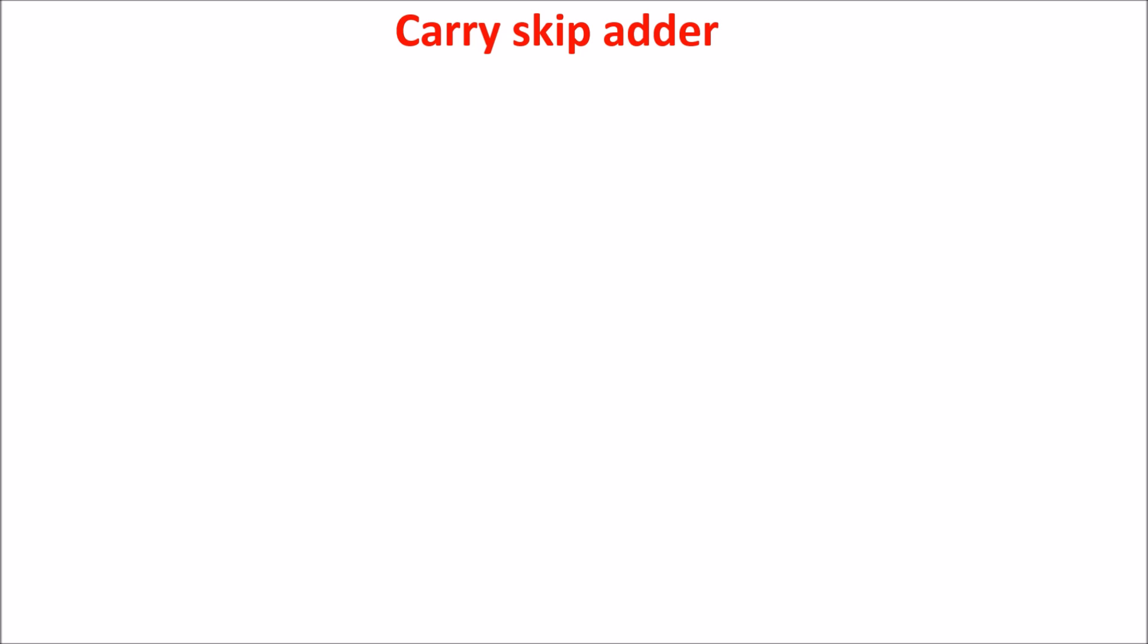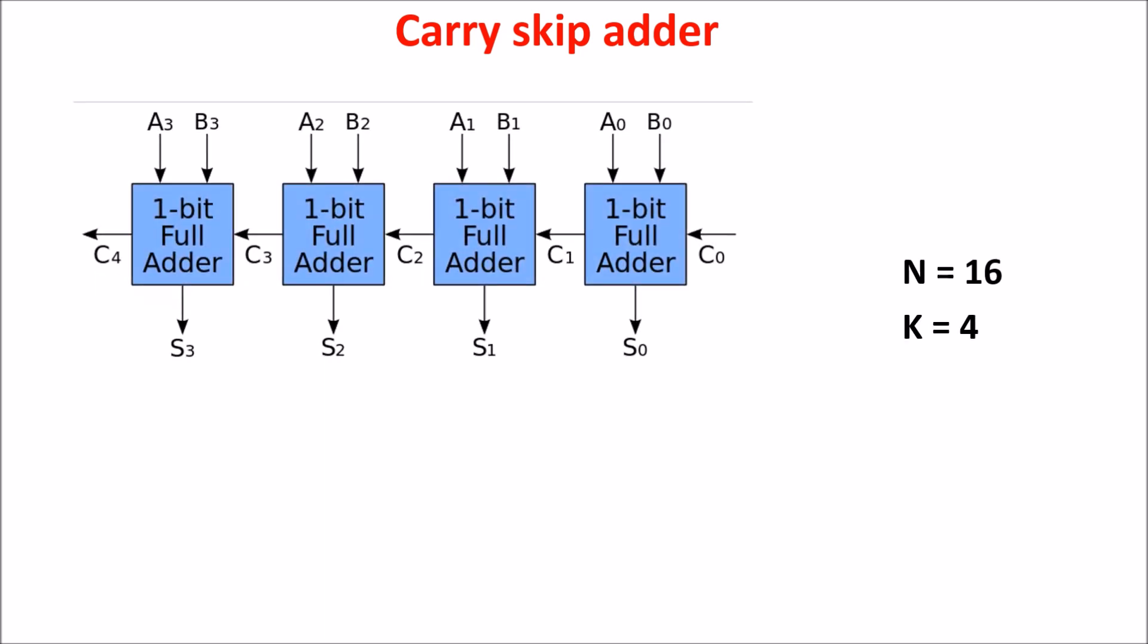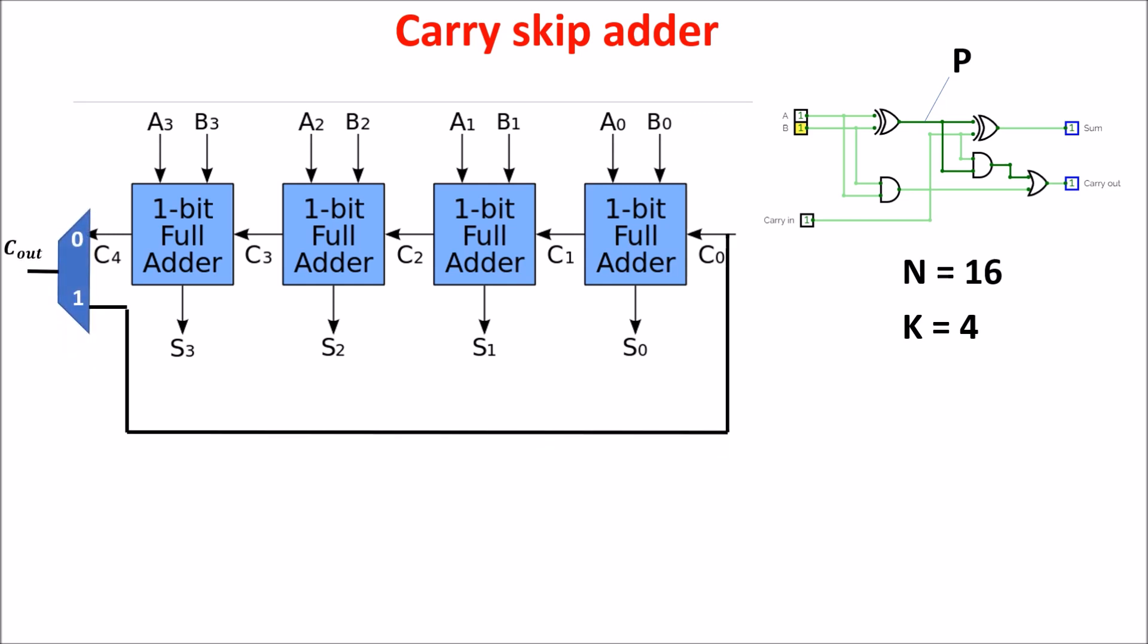So, we decide to divide our N bits addition in blocks of K bits each. In our case, N is 16 and K is 4, so we have four blocks of four bits each. Let's see the working of a single block. We remember that the propagation bit P is the output of the first XOR of the full adder, and we can use it to skip all the propagation line of our block, but only in the case in which all the propagation bits of the four full adders are high. So, if the AND of all the propagation bits is high, we let pass directly C0 through the multiplexer. Otherwise, we let pass C4.